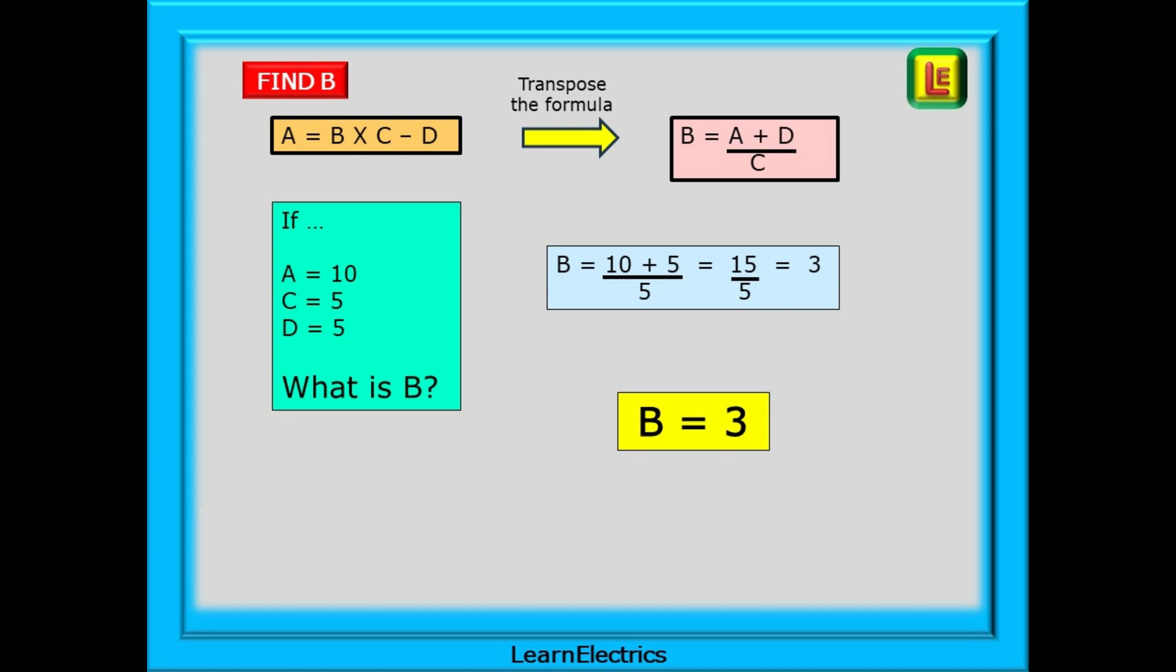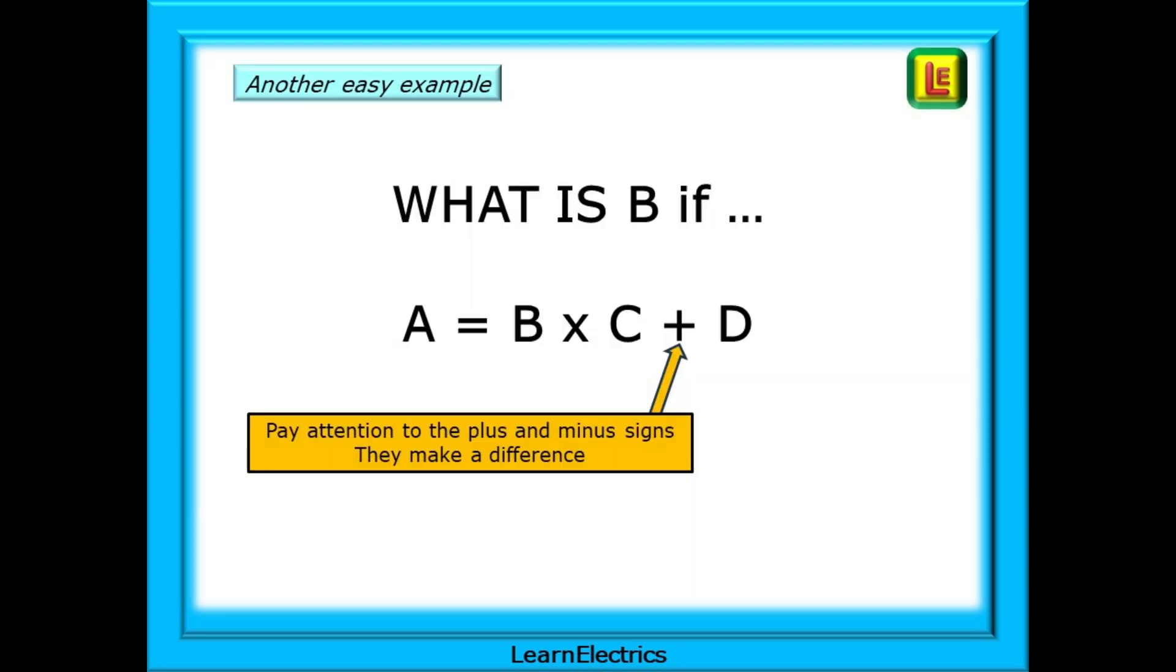We've now rearranged or transposed the formula to make B the subject. Let's put some numbers in. We're told that A is 10, C is 5 and D is also 5. We need to calculate B. The rest is easy now. 10 plus 5 is 15. Divide this by 5 and we have our answer B is 3. But what is the value of B if the formula contained plus D instead of minus D? Pay attention to the plus and minus signs in formulas. They make a difference to the answer.